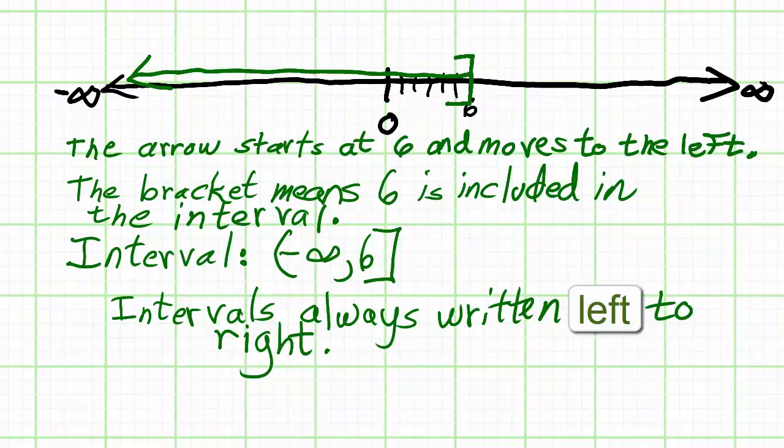Since negative infinity is on the left and 6 is on the right, we write the interval that way, even though when we graph that particular interval, the arrow moves from 6 to negative infinity.